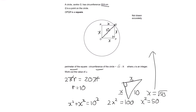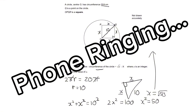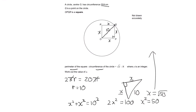Now √50 can be simplified. We can write √50 as √(25 × 2), which equals √25 × √2. Since √25 = 5, this simplifies to 5√2. So we can rewrite √50 as 5√2, and that is what x is equal to.